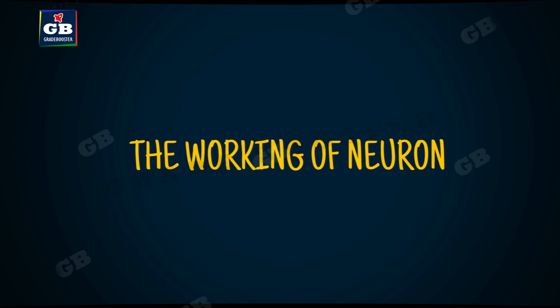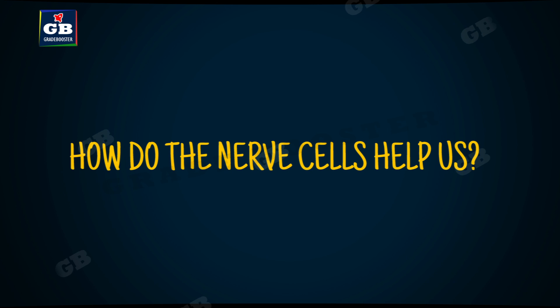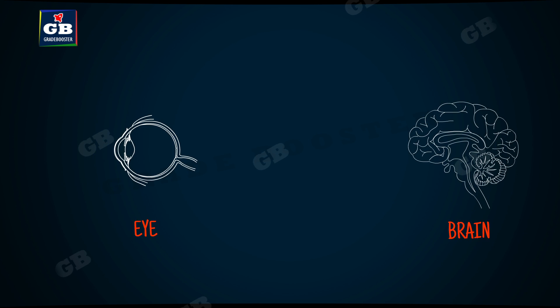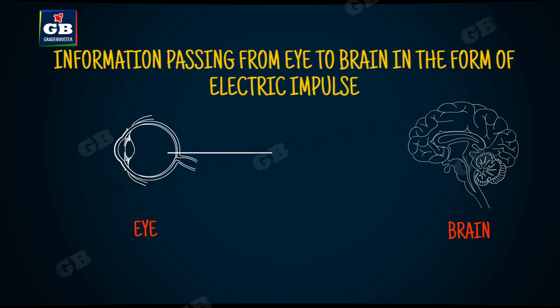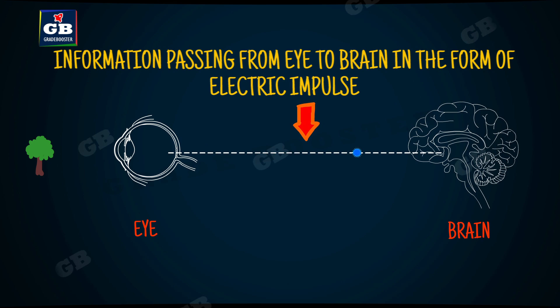Now let's see how the nerve cell functions — what is its role, what is its function, and how do these nerve cells help us? Nerve cells help us in the transmission of information from one part to another part of our body. For example, we see an object with our eyes, and the visual information of that object is to be carried to our brain to recognize that object.